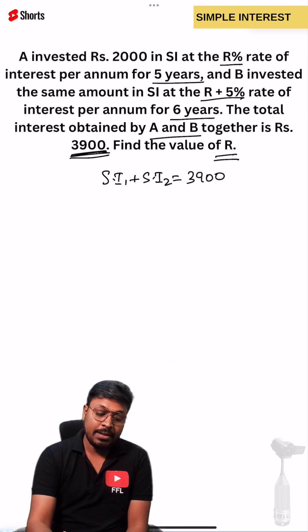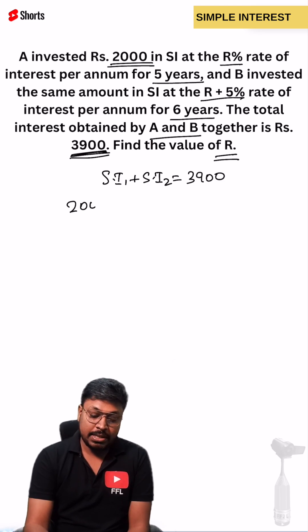P times N times R by 100 is the formula. The principle is common for both people. 2000 divided by 100, times N and R.